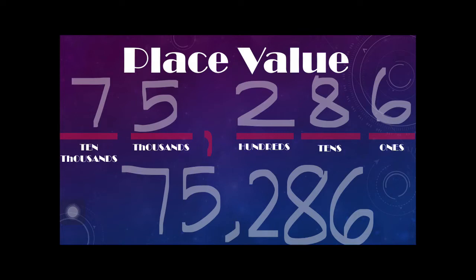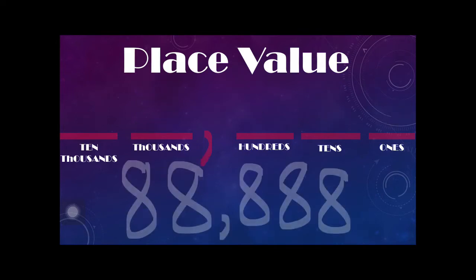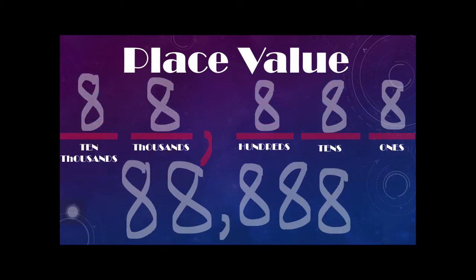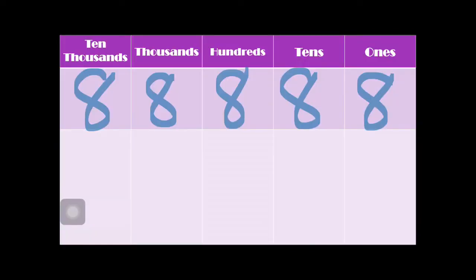Let's have another example. What if we have 88,888? As you can see, all the digits are the same — ones place, tens place, hundreds place, thousands place, and ten-thousands place. The question is: if you have the same digits in a number, will their value be the same? Let's find out. We have eight ones, eight tens, eight hundreds, eight thousands, and eight ten-thousands.